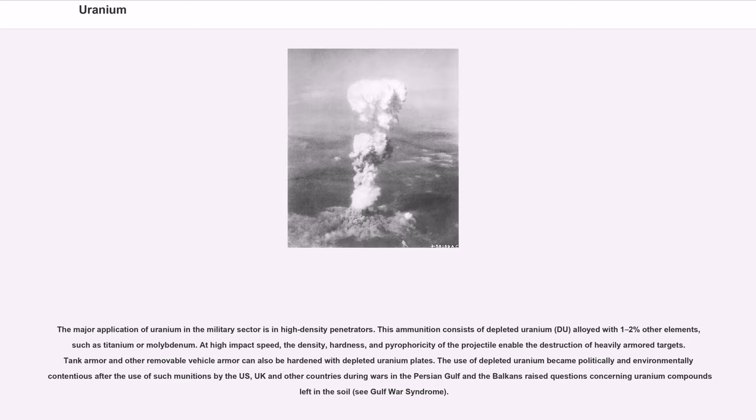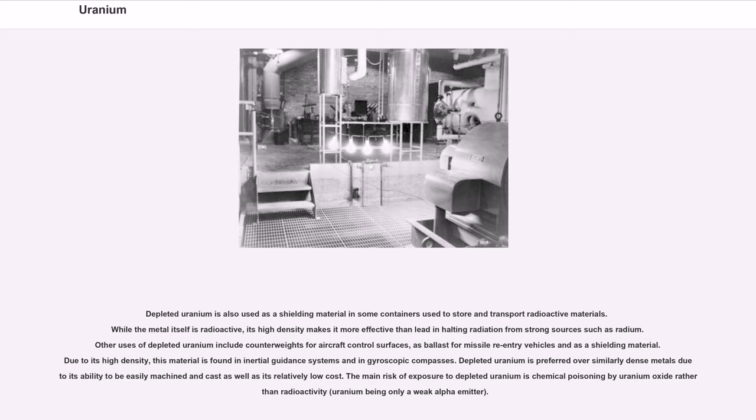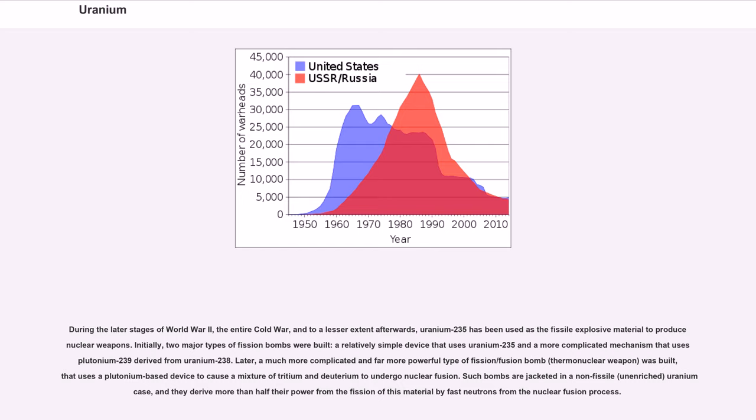The use of depleted uranium became politically and environmentally contentious after the use of such munitions by the U.S., U.K., and other countries during wars in the Persian Gulf and the Balkans raised questions concerning uranium compounds left in the soil. Depleted uranium is also used as a shielding material in some containers used to store and transport radioactive materials. While the metal itself is radioactive, its high density makes it more effective than lead in halting radiation from strong sources such as radium. The main risk of exposure to depleted uranium is chemical poisoning by uranium oxide rather than radioactivity, uranium being only a weak alpha emitter.